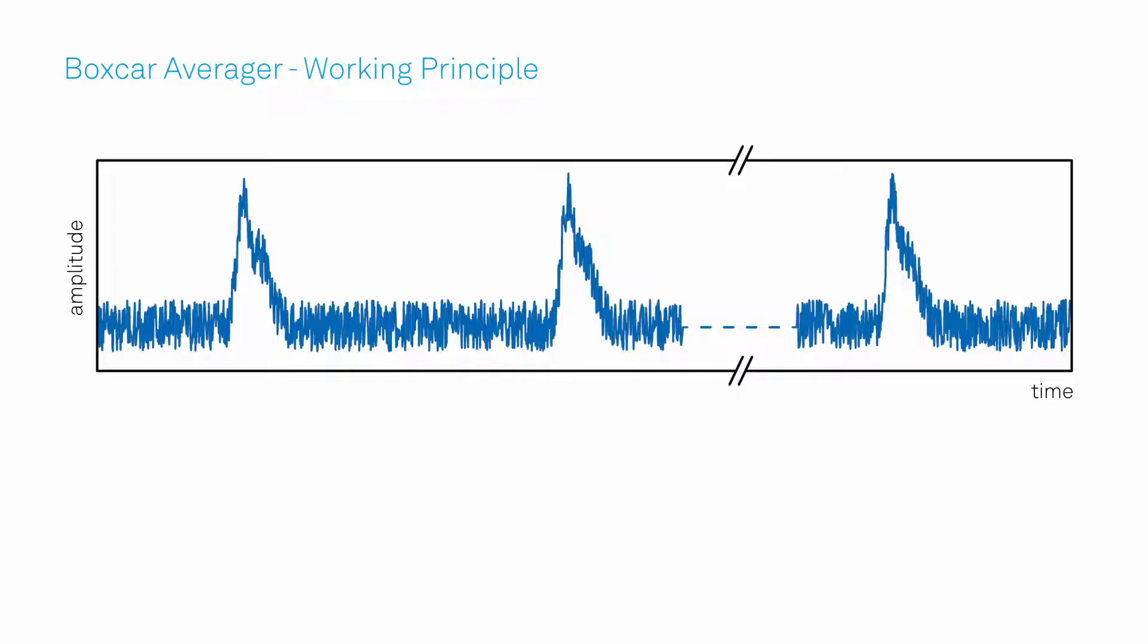And that's exactly what a boxcar aperture does. It captures the signal during a well-defined temporal window that matches the pulses duration and position.